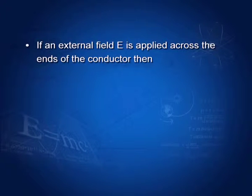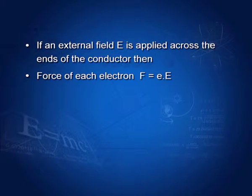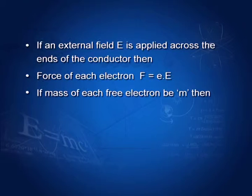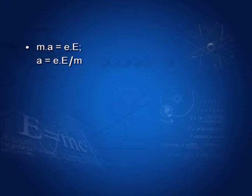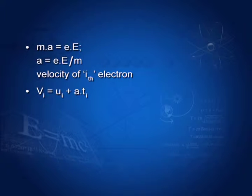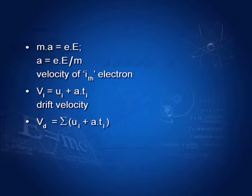If an external field E is applied across the ends of the conductor, then force on each electron F equals the charge of the electron multiplied by the electric field. If mass of each electron be M, then F equals MA (Newton's second law), where A is the acceleration produced in each electron. So M × A = e × E, therefore acceleration A = eE/M. The velocity of the ith particle using the first equation of motion: V_i = U_i + A × T_i. So drift velocity equals summation of U_i plus A × T. Since summation of U_i is zero, V_d = A × T.